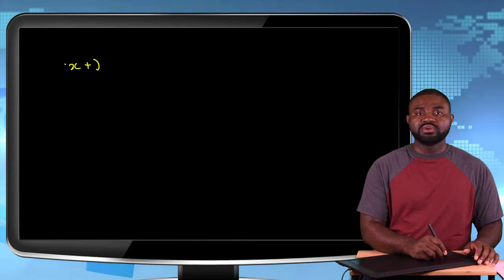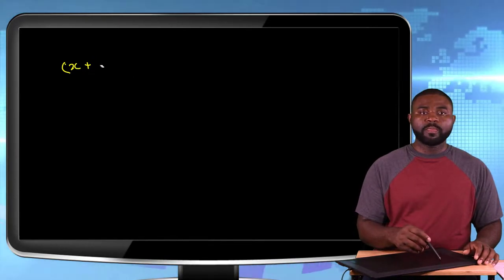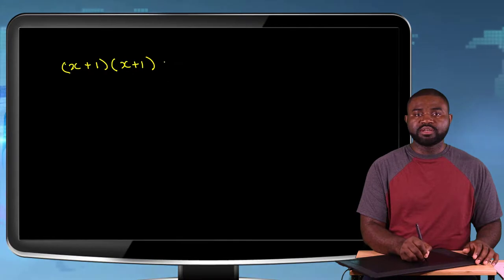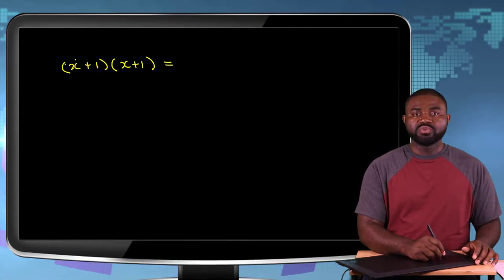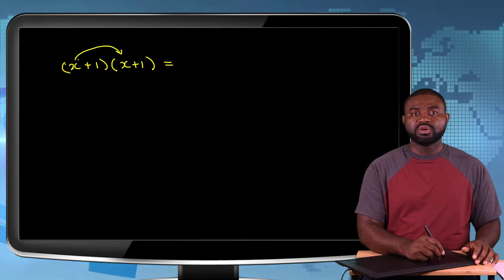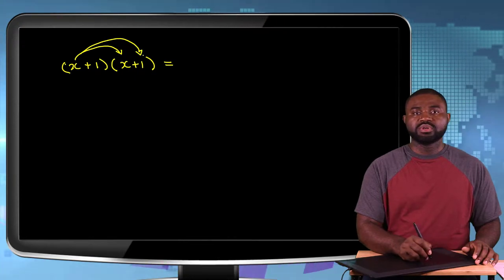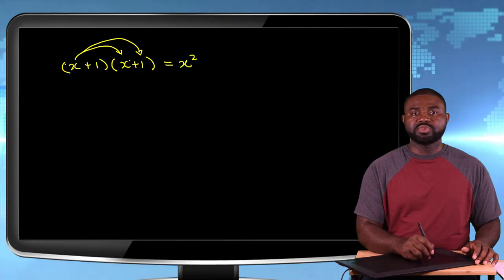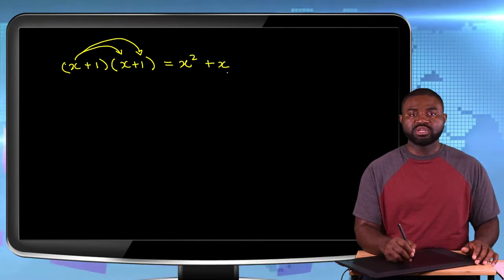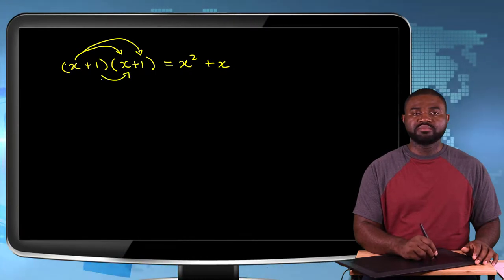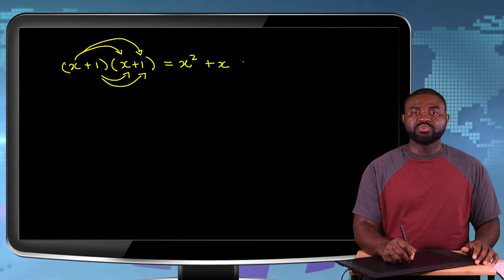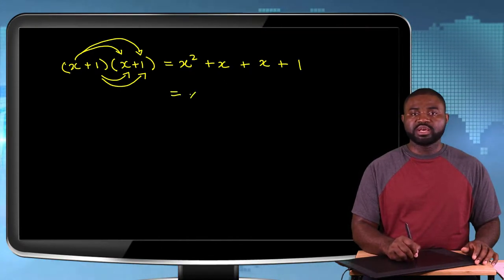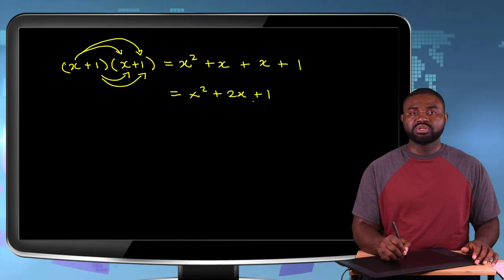So we have X plus 1 multiplied by X plus 1. How do we expand this? This term multiplies this term and that term. So X multiplied by X gives us X squared; X multiplied by 1 is just X. Then 1 multiplied by X is X, and 1 multiplied by 1 is 1.